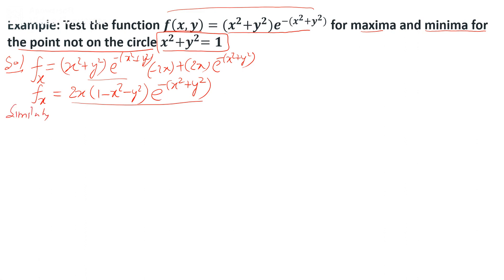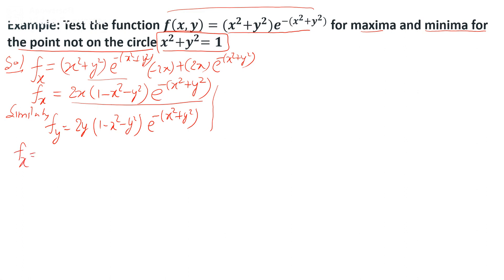Similarly, we find the partial derivative with respect to y: fy = 2y(1 - x² - y²)e^(x²+y²). To find the stationary points, we substitute fx = 0 and fy = 0.